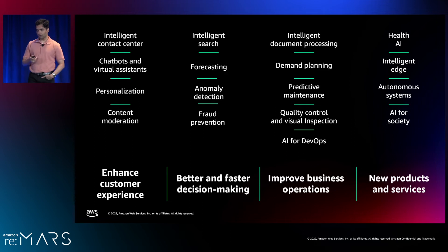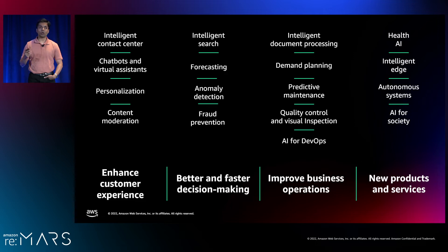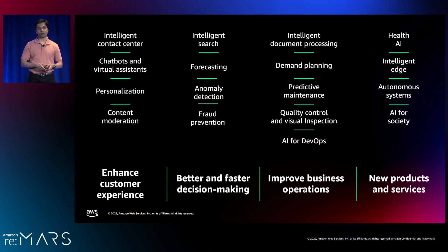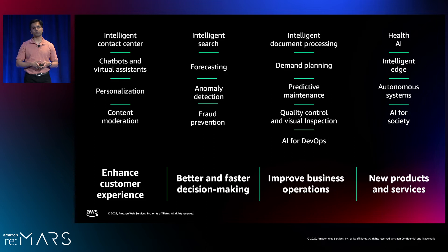Now that we've spoken about theory and all aspects of explainability and fairness, let's talk about the impact on the industry. Machine learning is making an impact in different areas: customer experience with chatbots and virtual assistants, forecasting and anomaly detection, fraudulent transaction detection, and intelligent document processing. A consistent theme with banking customers is that models being used are mostly tree-based models or NLP models, because that's the majority of their use cases. Tabular data is also the majority of data they need to process as part of machine learning.